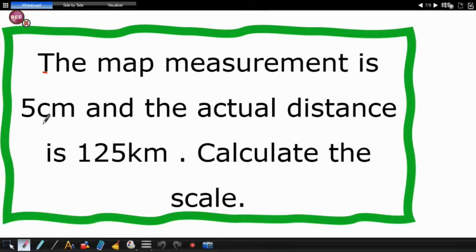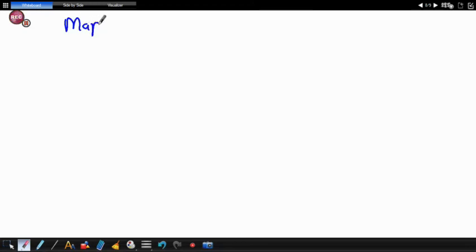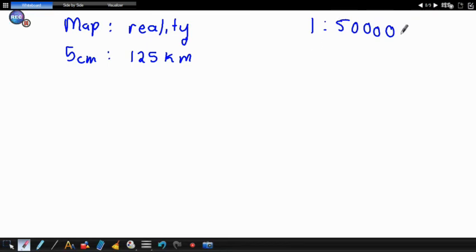Now let's look at if they give you both. They give you map measurements and then they also give you the actual distance and they actually want you to work out the scale. How do we do this? We are going to have map as to reality. On the map, it's five centimeters. In reality, we have 125 kilometers. Now we know that for a number scale, for example, if I have one is to 50,000, this means it's one unit in the map represents 50,000 units in real life. So one centimeter on the map will represent 50,000 centimeters in real life. This is what it means. So that means if I have centimeters here, that means here also have to have centimeters. And that's what we're trying to achieve here.